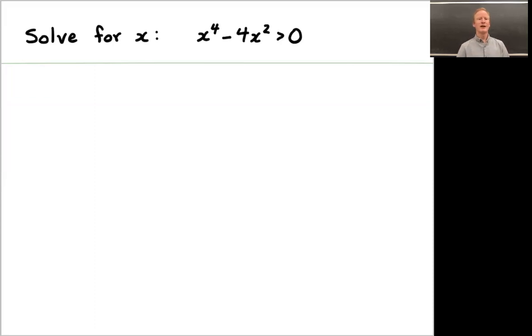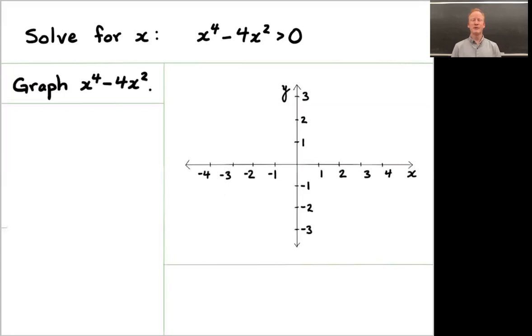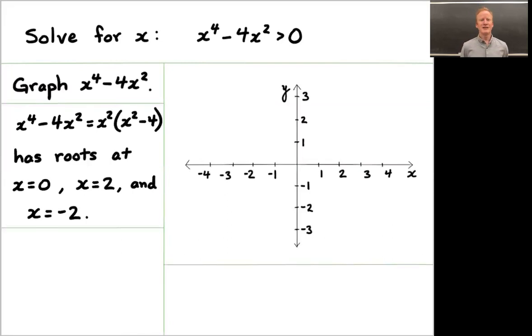Welcome back. There's a couple ways to solve this problem. I'm going to solve it by doing a little bit more than what was asked for. I'm actually going to graph the function x to the 4th minus 4x squared and from its graph we'll see a solution. x to the 4th minus 4x squared, you can factor out an x squared and that is x squared times the difference of x squared and 4.